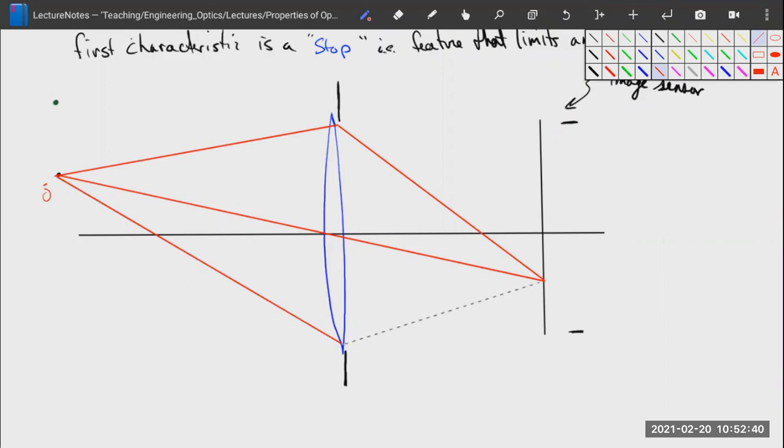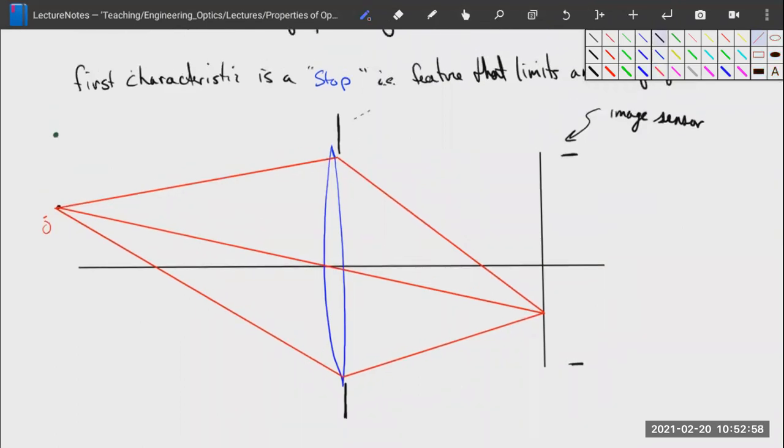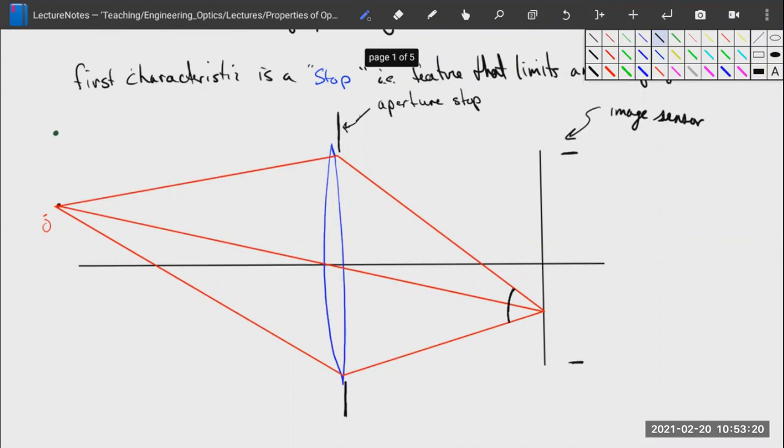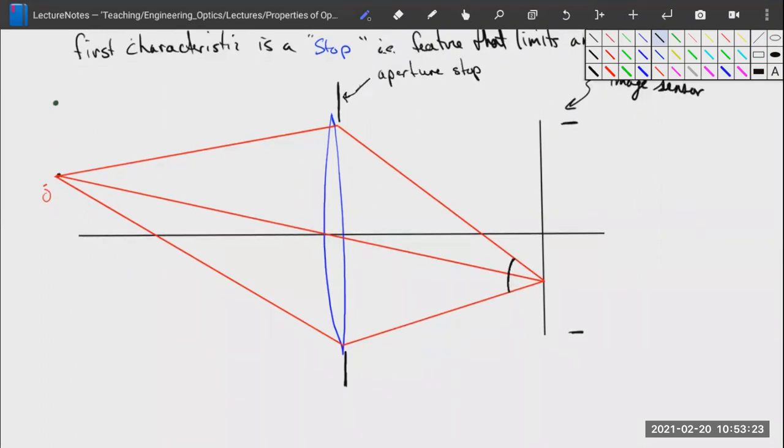Whenever they hit our lens, they go straight to that image. This is not how real lenses behave, but this is how an ideal lens behaves, and we can use it to design our system. In this case, this first stop has limited the cone of light that reaches our image sensor. This stop has limited that cone of light and it's called our aperture stop.